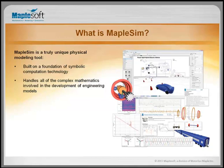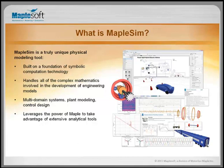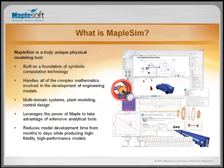Because MapleSim can solve equations, it doesn't care what the domain is — as long as there's a governing equation, it can handle it. We can do multi-domain systems: plant modeling, control design, multi-body systems, all in one environment. It leverages Maple's extensive analytical tools for things you can't do purely numerically. For example, to find frequency response numerically you'd throw in a broadband pulse or run a thousand simulations — but if you have the equation, you can manipulate it, throw it into the Fourier domain, and there's your answer. Because of all these features, MapleSim reduces model development time from months to days while producing high-fidelity, high-performance models.